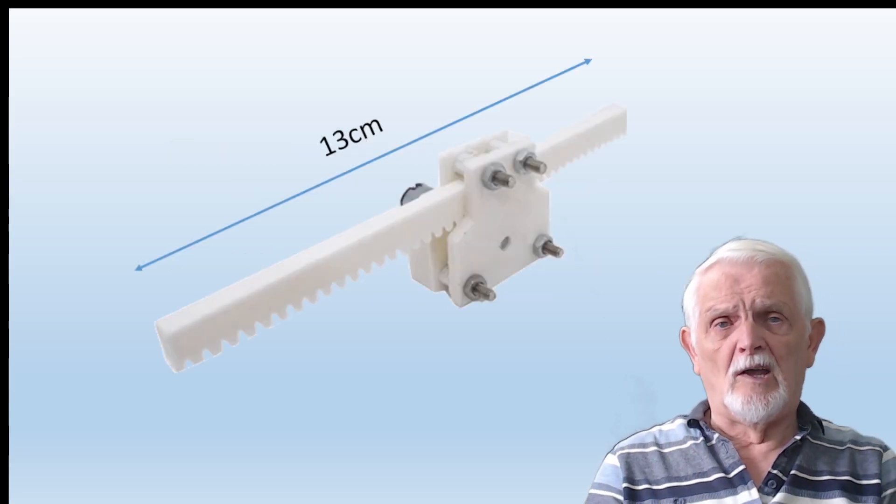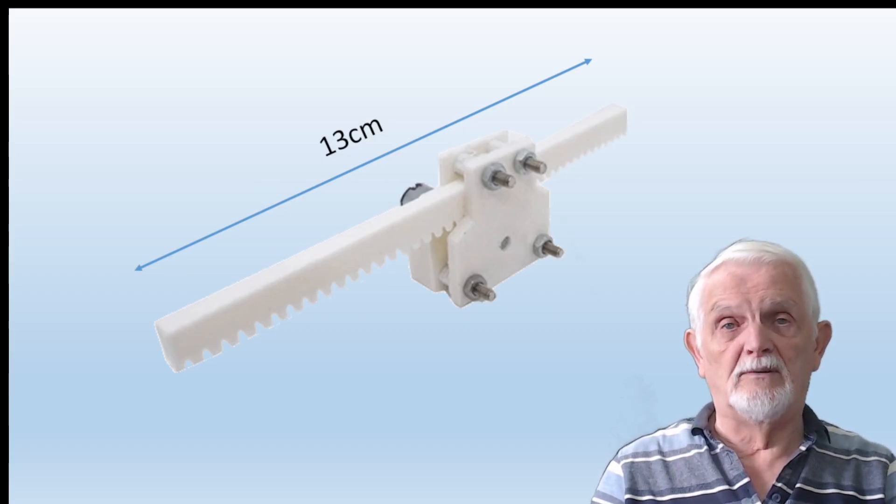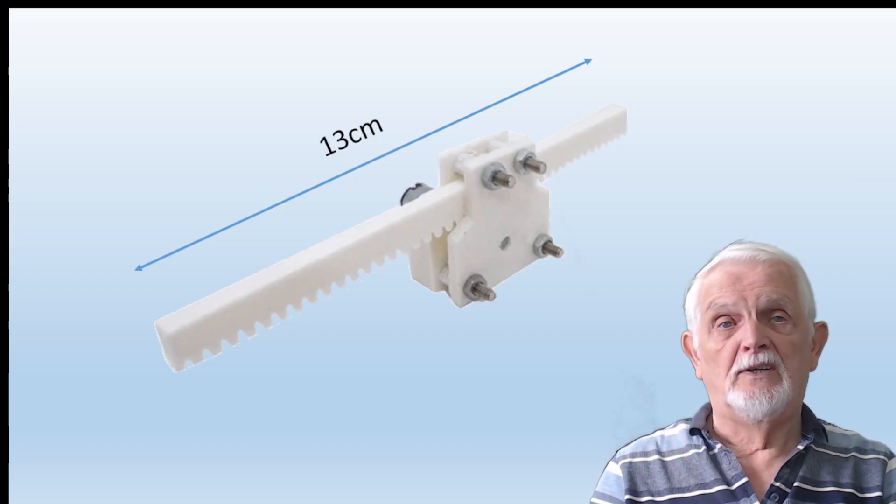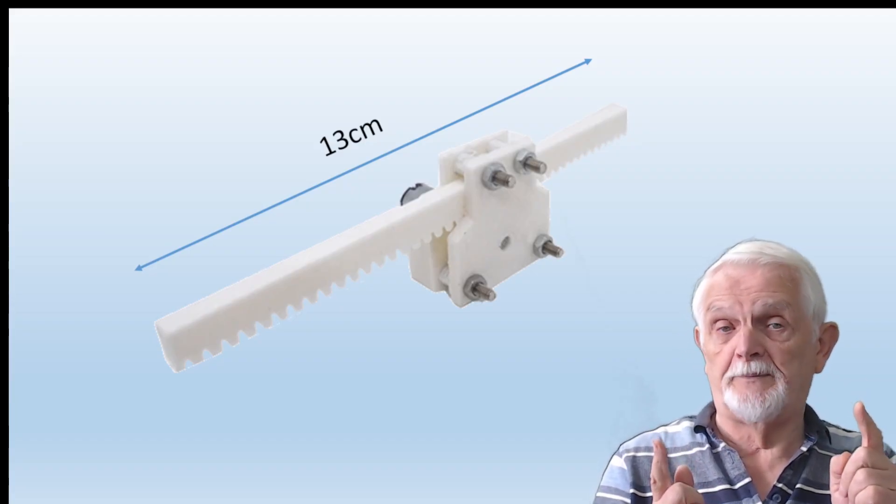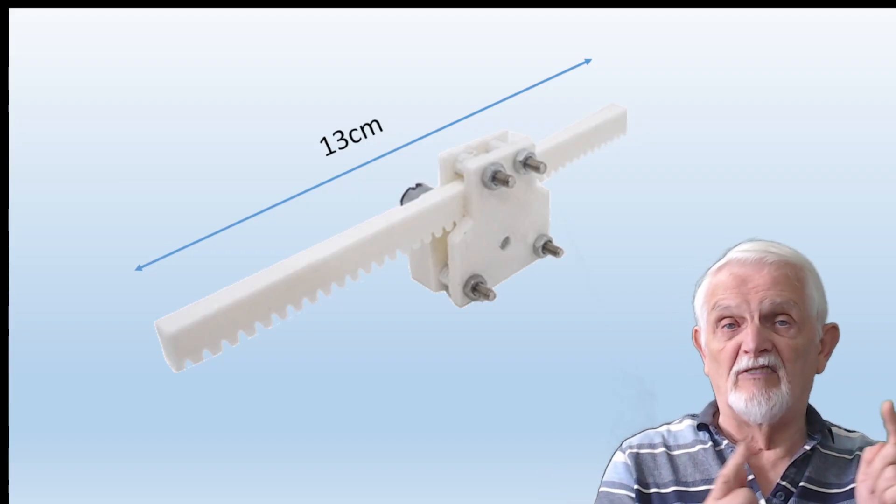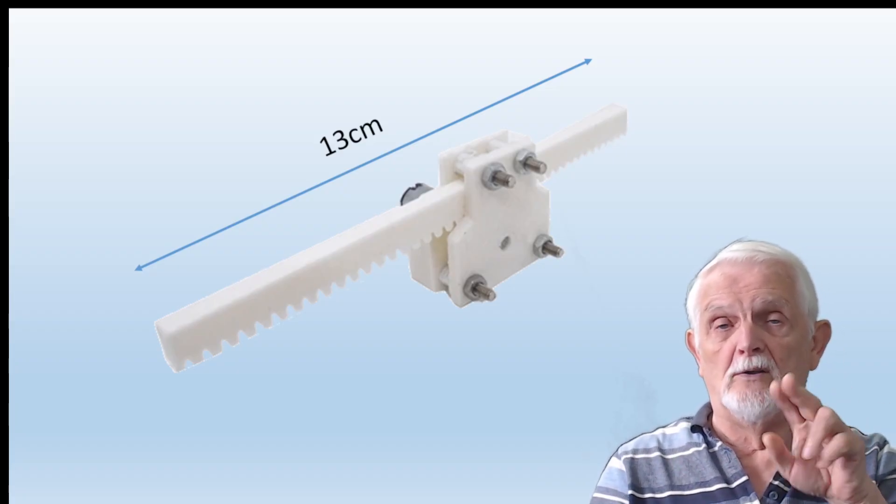There's an example of a DC motor with a rack and pinion which moves that larger part. You can see it's 13 centimeters across, so you get quite a bit of movement in the other direction simply by reversing the polarity on the DC motor.